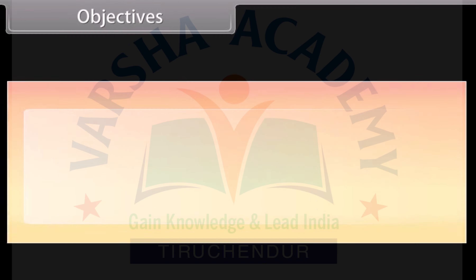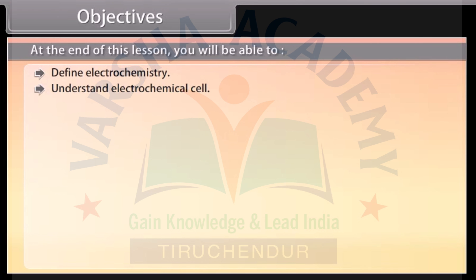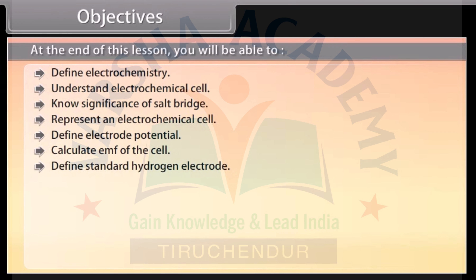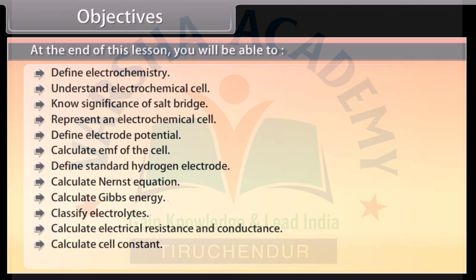Objectives: At the end of this lesson, you will be able to define electrochemistry, understand electrochemical cell, know the significance of salt bridge, represent an electrochemical cell, define electrode potential, calculate EMF of the cell, define standard hydrogen electrode, calculate the Nernst equation, calculate Gibbs energy, classify electrolytes, calculate electrical resistance and conductance, calculate cell constant, and explain Kohlrausch's law.